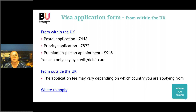For the application forms: if applying from within the UK, there are three options — a standard postal application costing £448, a priority postal application where UKVI decides faster, or a premium in-person appointment where a decision is made the same day. Payment within the UK is by credit or debit card only. If applying from outside the UK, the application form link and visa fee vary depending on which country you're applying from. If unsure where your nearest visa application centre is, you can search by country using the link provided.